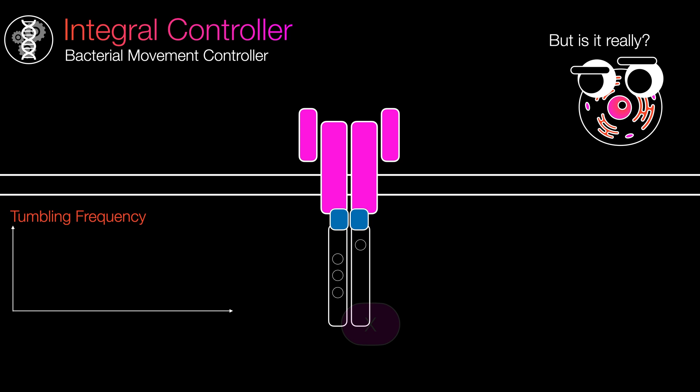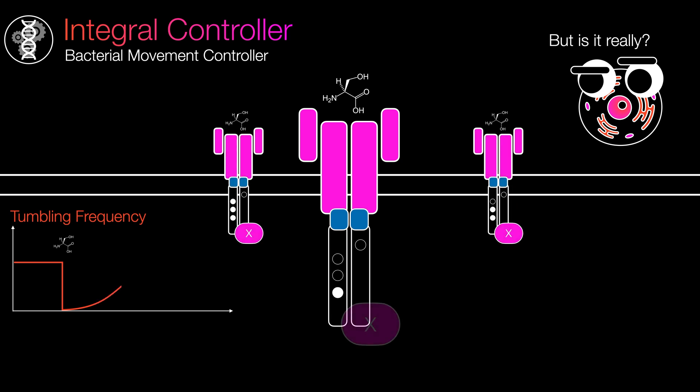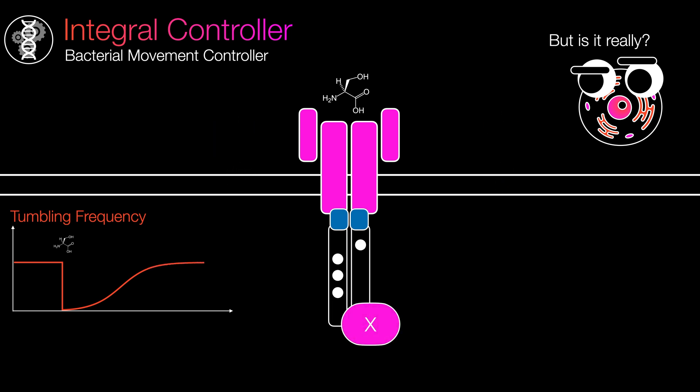Well, you might argue that the integrator works by adding the error over time, right? The signal introduces a substantial error into the system that would have persisted if it's not corrected. The only way to eliminate this error is by increasing X's activation. The effort the controller exerts is dependent on the number of methyl groups attached to the vast sea of receptors on the bacteria. I agree. This explanation seems logical.